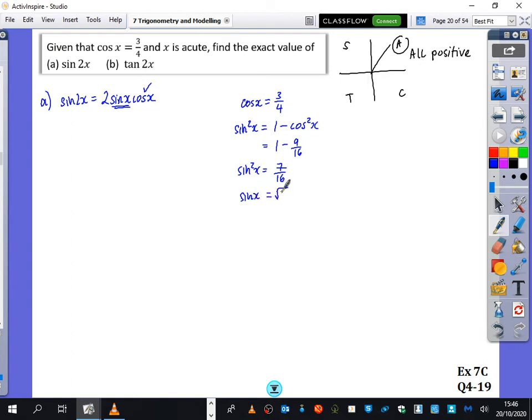So sine x is going to be root 7 over 4. And I know it's going to be positive because of this thing that I've got written here.